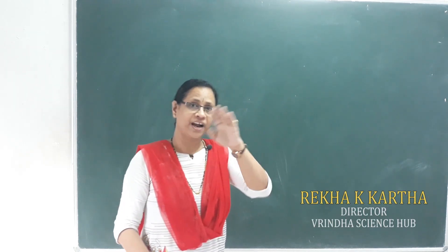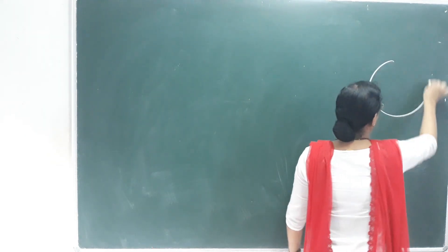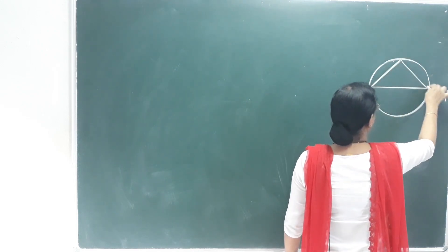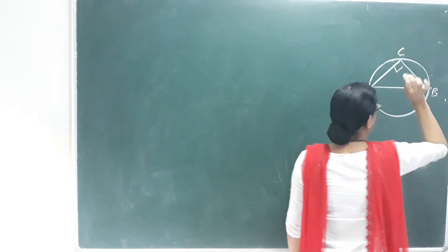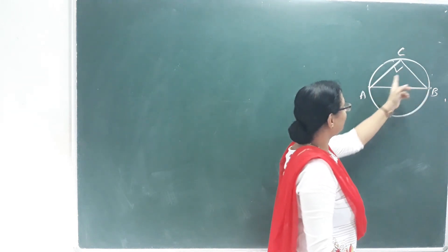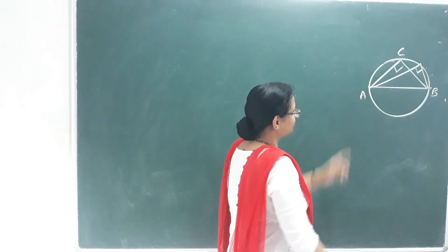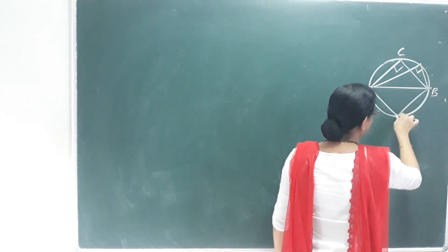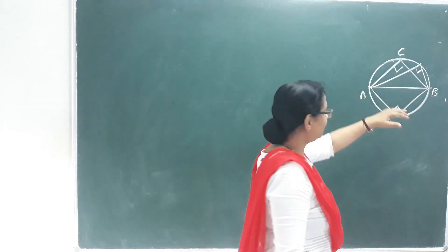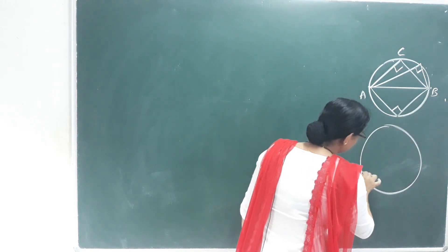First, the angle in a semi-circle is 90 degrees. Any angle constructed in a semi-circle is 90 degrees — this is the first theorem. The diameter subtends a 90-degree angle at any point on the circle.